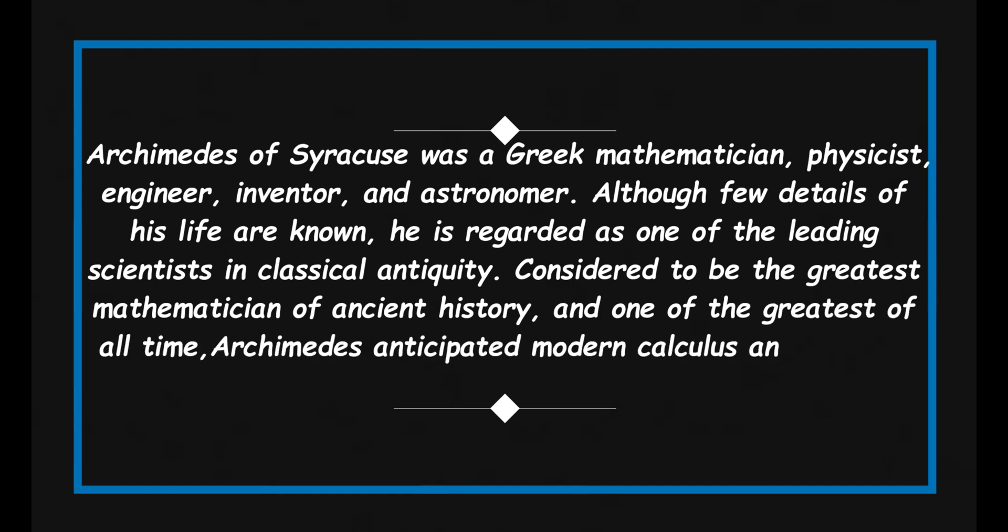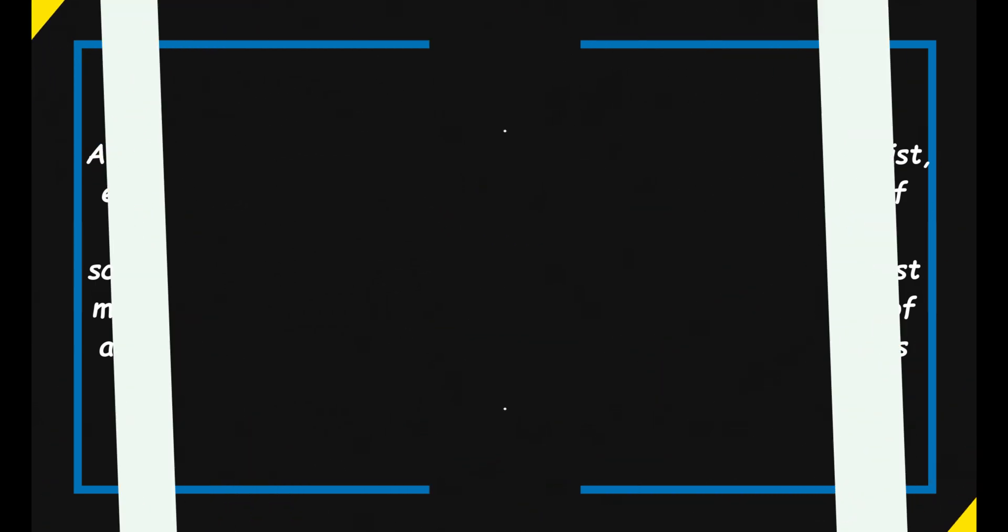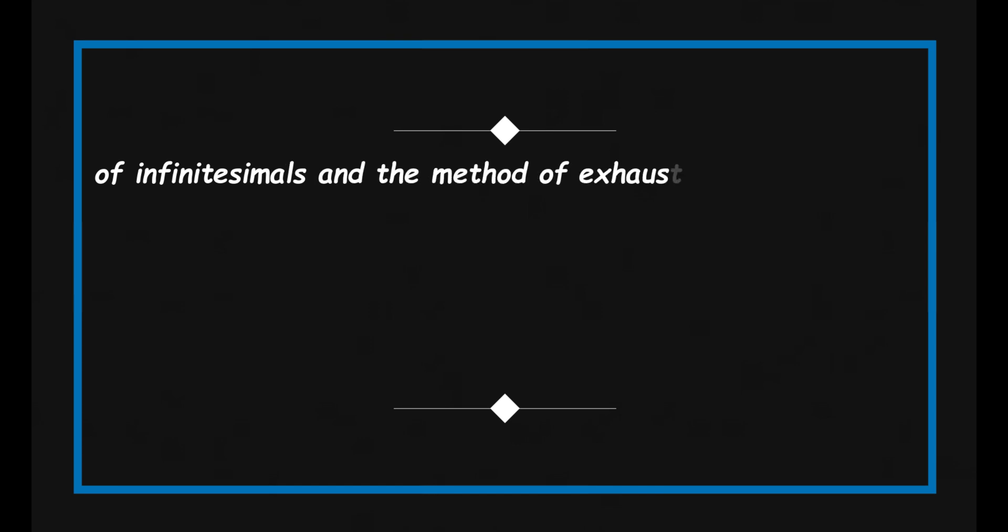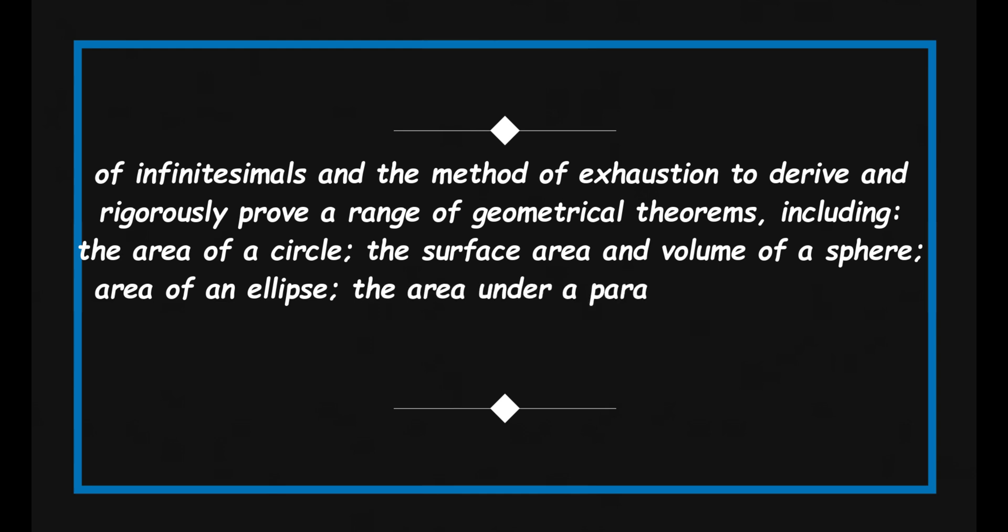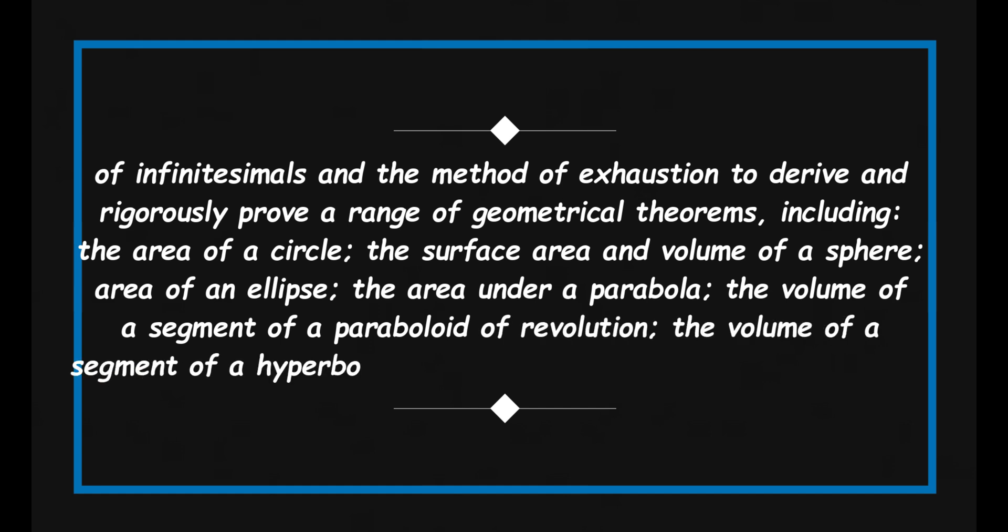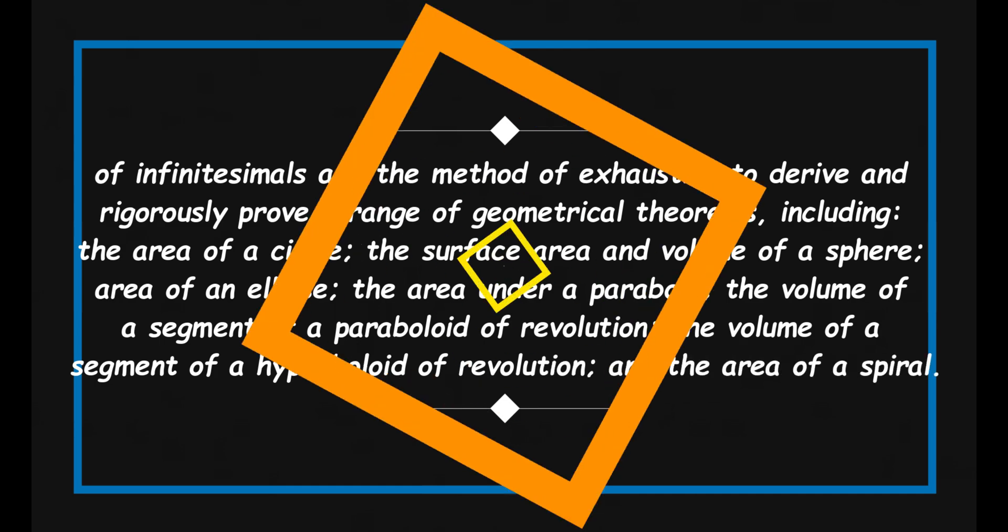Archimedes anticipated modern calculus and analysis by applying concepts of infinitesimals and the method of exhaustion to derive and rigorously prove a range of geometrical theorems, including: the area of a circle; the surface area and volume of a sphere; area of an ellipse; the area under a parabola; the volume of a segment of a paraboloid of revolution; the volume of a segment of a hyperboloid of revolution; and the area of a spiral.